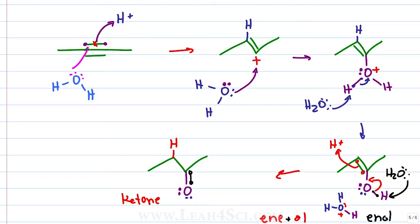Why a ketone and not an alcohol? Because we have an alcohol forming, but it's an alcohol on an alkene carbon — an unstable enol — causing it to undergo keto-enol tautomerization.